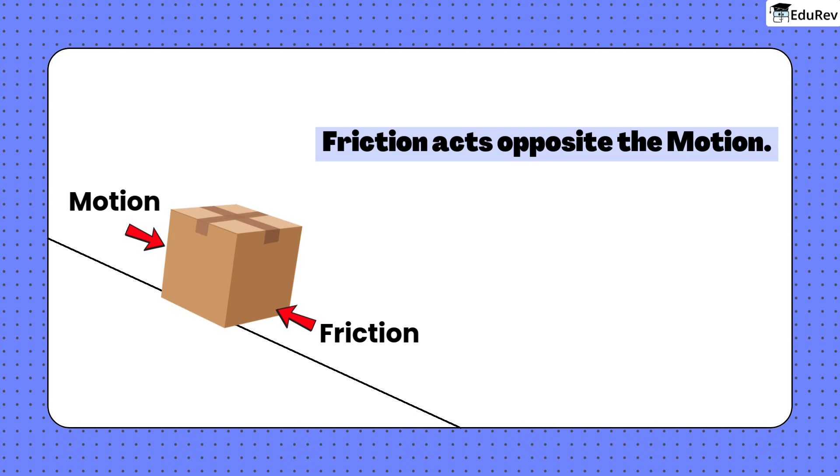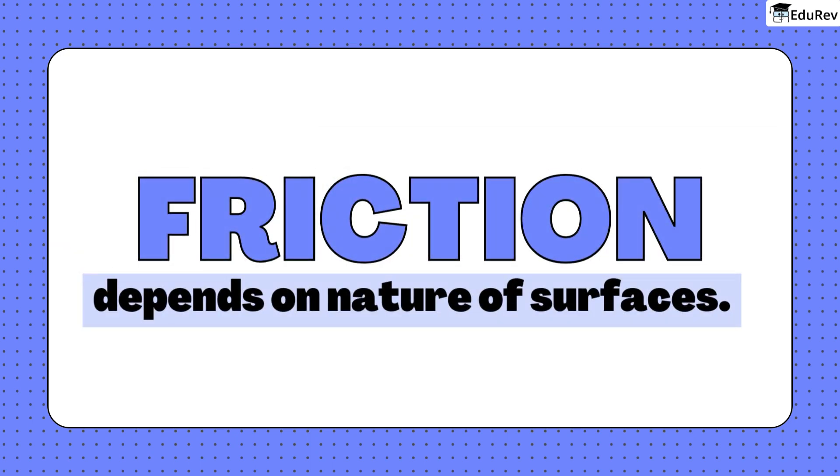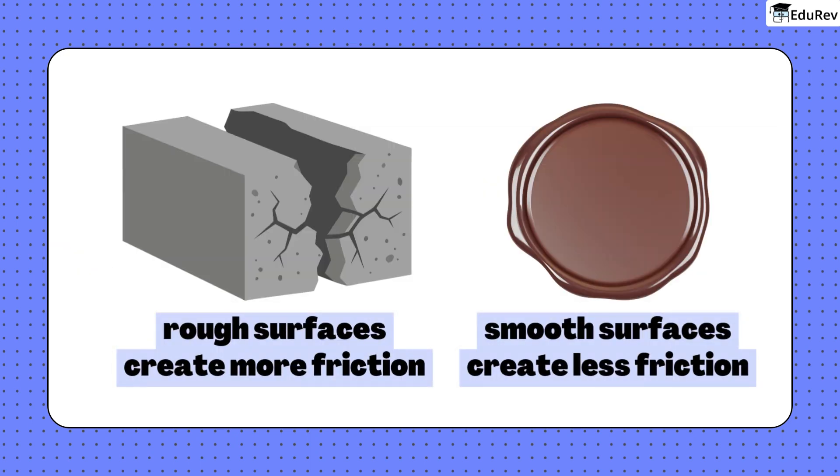Push a box on a floor, it moves some distance, then stops because friction acts opposite the motion. Friction depends on surfaces. Rough surfaces create more friction. Smooth surfaces create less.